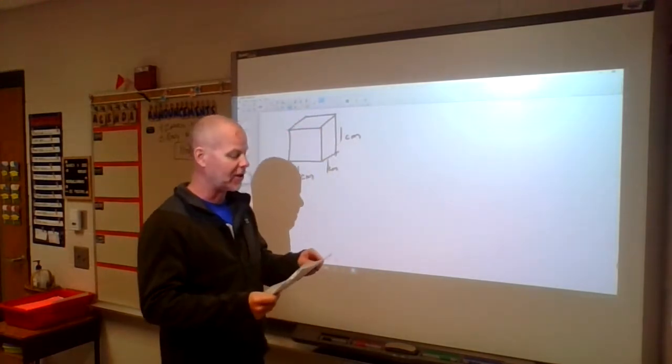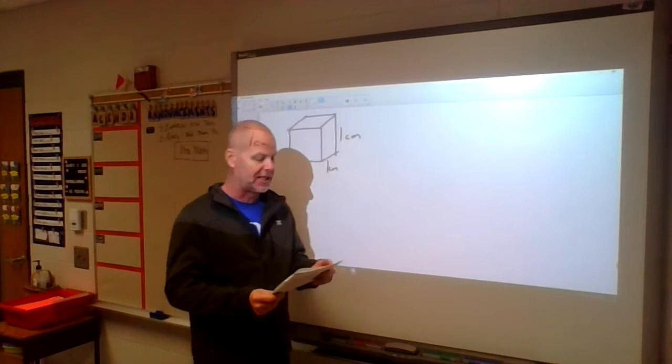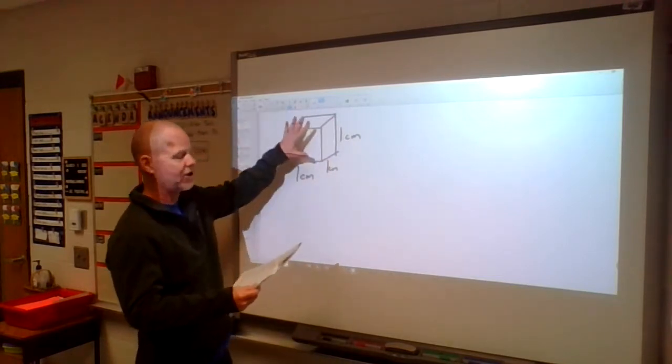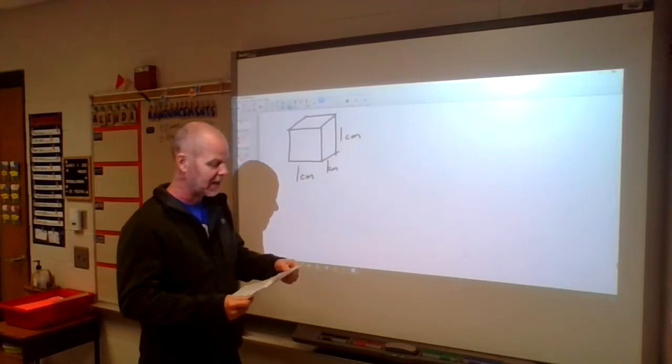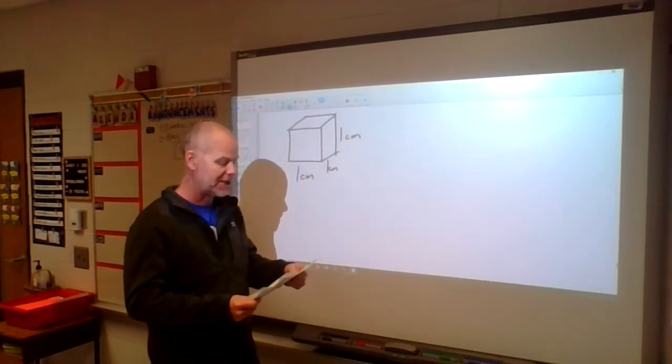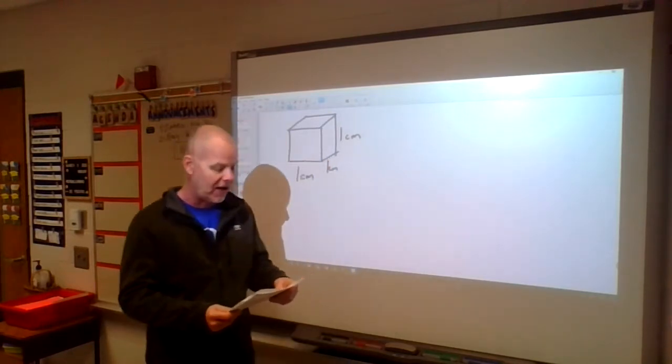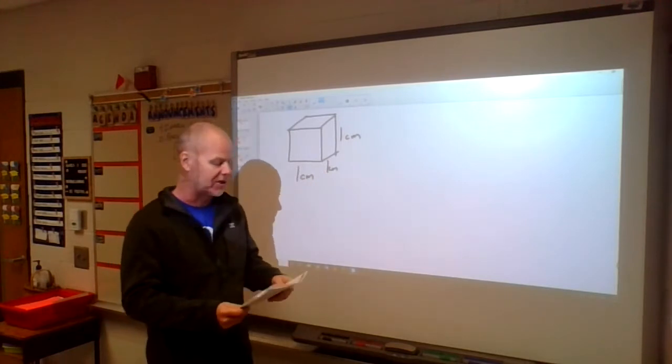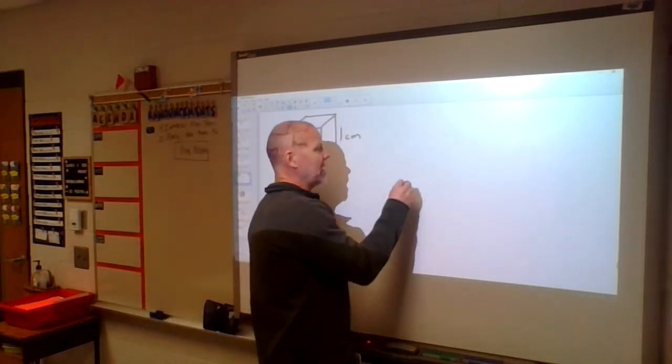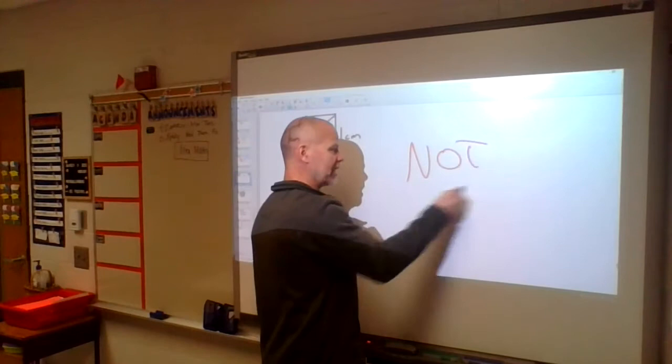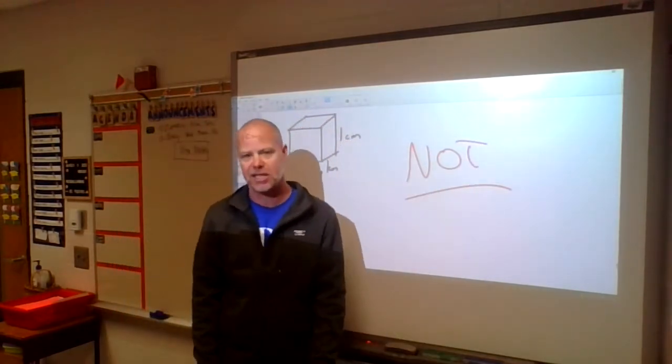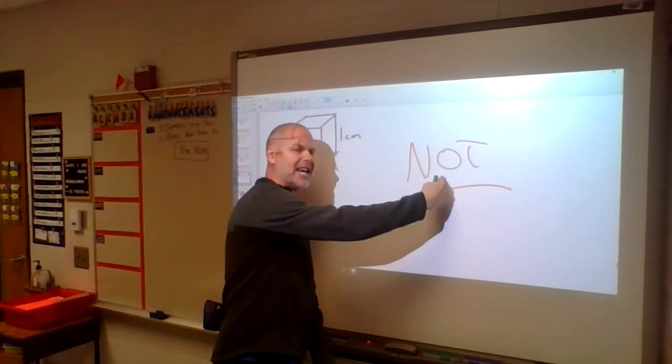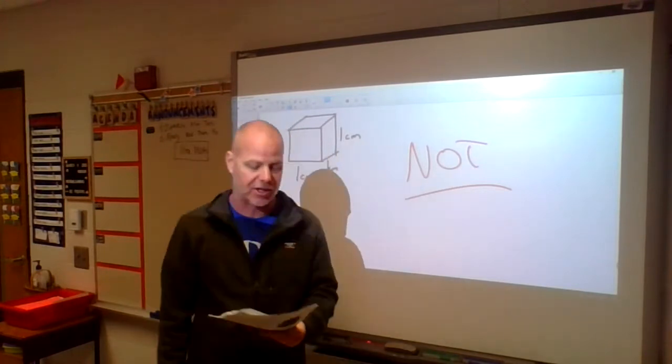Number 15. Karen used cubes that measure one centimeter on each side. Here's a cube measuring one centimeter on each side, not drawn to scale obviously. Which of Karen's prisms does not have a volume of 36 cubic centimeters? So again, not. That's what we're looking for. We're not looking for ones that have the volume of 36. We're looking for those that do not have a volume of 36 cubic centimeters.